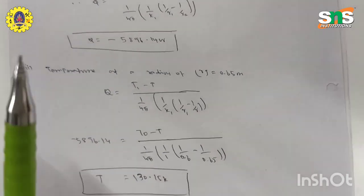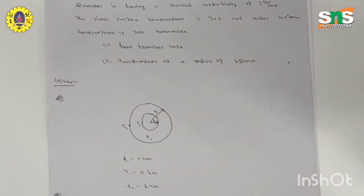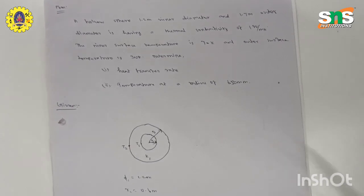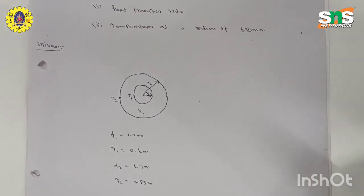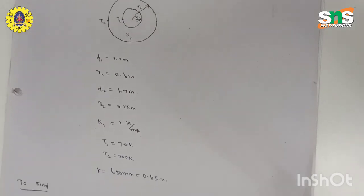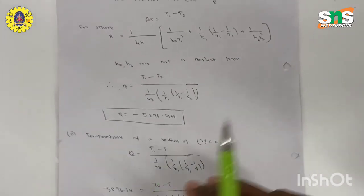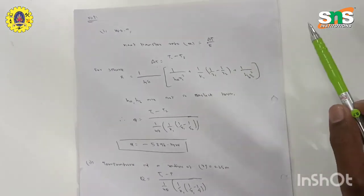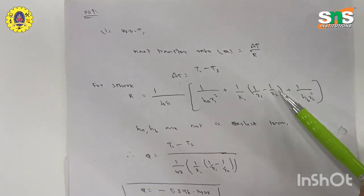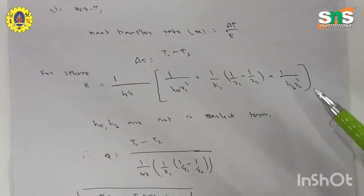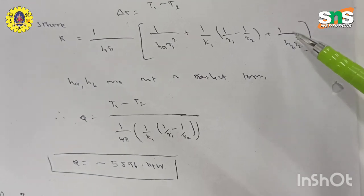To summarize: this is a hollow sphere problem where the temperatures, diameters, thermal conductivity, and surface heat transfer coefficients are given. We need to find the heat transfer rate and temperature at a particular radius. First, we find Q using the sphere thermal resistance formula: R = 1/(4π) × [1/(h_A × R1²) + (1/K) × (1/R1 − 1/R2) + 1/(h_B × R2²)]. Since h_A and h_B are not given, we neglect them.